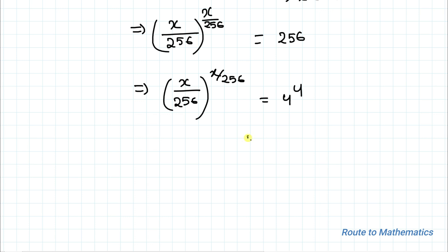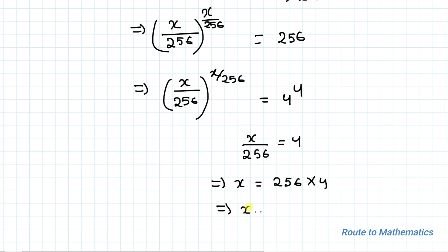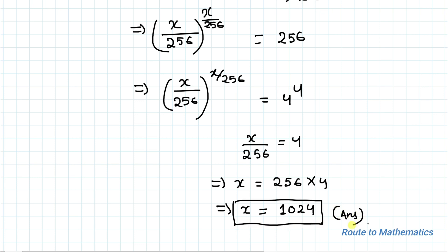So we can write x/256 equals 4, which implies x equals 256 multiplied by 4, which gives x equals 1024 as our answer. I hope you have understood the solution. Thanks for watching — please subscribe to my channel for more such interesting videos!